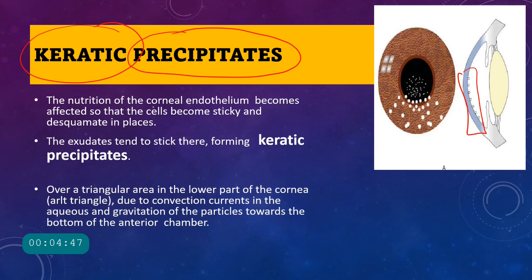The corneal endothelium receives nutrition from the aqueous humor. When there is inflammation of the aqueous, the nutrition of the endothelium is affected, the cells become sticky and get desquamated from their normal places. This sticky endothelium attracts inflammatory cells present in the aqueous humor, and these cells stick on the back of the endothelium, leading to the formation of keratic precipitates.